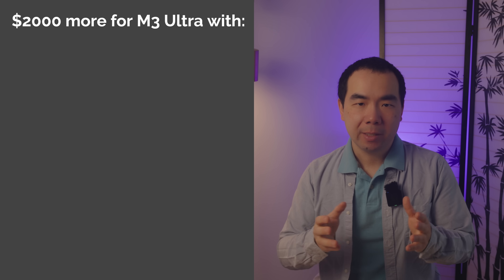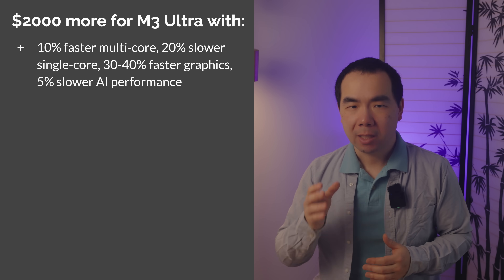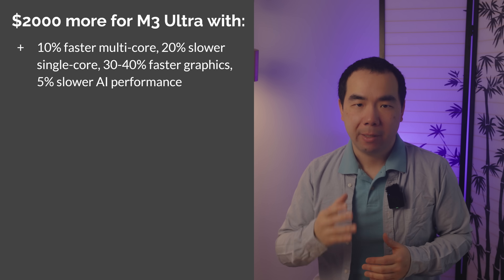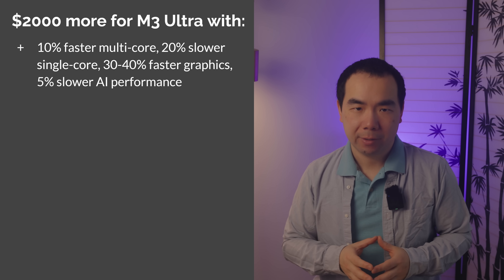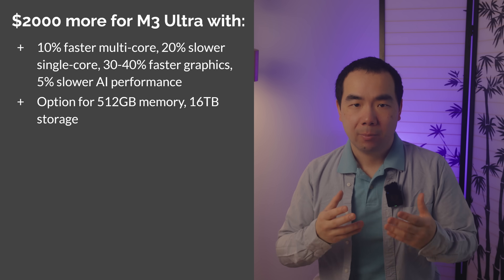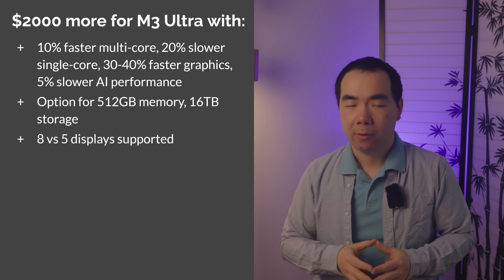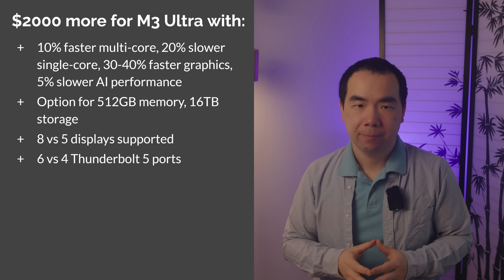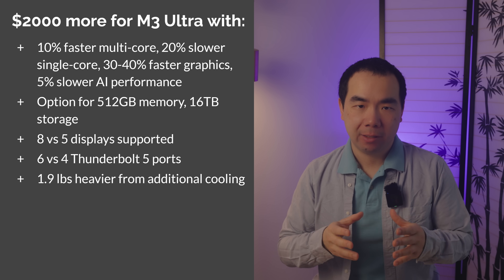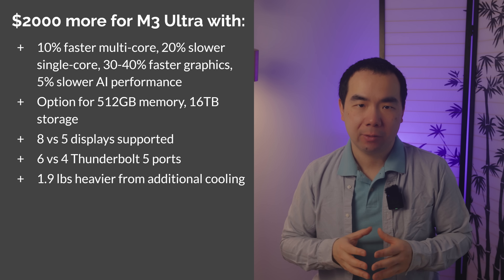And that's it for the differences. So in summary, paying $2,000 more for the M3 Ultra Mac Studio over the M4 Max gets you the M3 Ultra chip, which will be faster in multi-core performance but possibly by only 10%, slower in single-core by 20%, 30–40% faster in graphics, and maybe slower in AI workloads. Plus the option to spend tons more money to upgrade memory to 256GB or 512GB, storage to 16TB, support for 3 additional displays, 2 extra Thunderbolt 5 ports converted from regular USB-C ports on the front, and 1.9 pounds of additional weight from added cooling. Although the Max Mac Studio's cooling has already been more than sufficient to keep things cool and quiet, even under heavy loads.